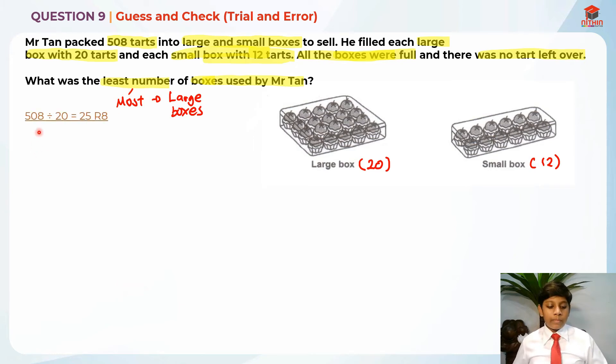First, I'm going to take 508 divided by 20, because each large box holds 20 of the tarts. It will give us 25 remainder 8. I want this remainder to be a multiple of 12. So basically, there's 25 boxes of 508 tarts, right? But then this remainder needs to be a multiple of 12. So 25 is not going to work out.